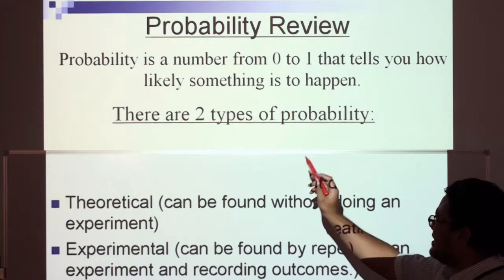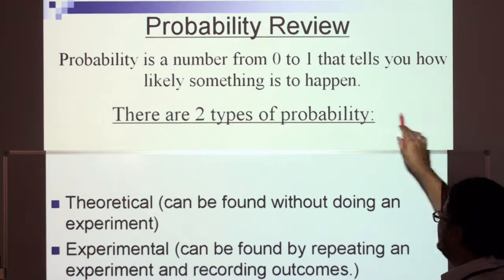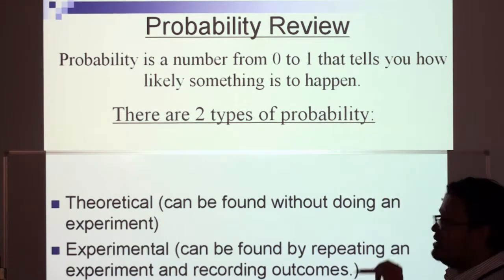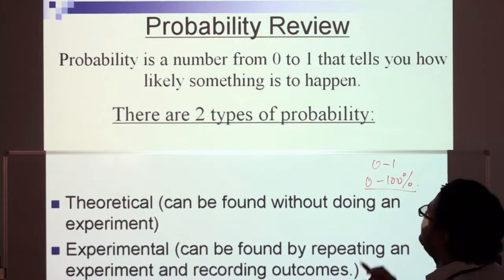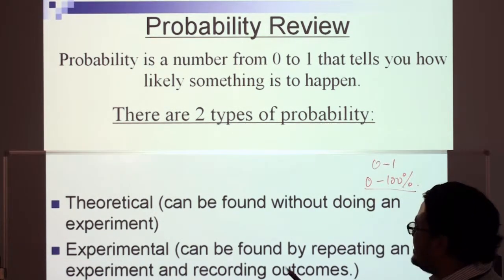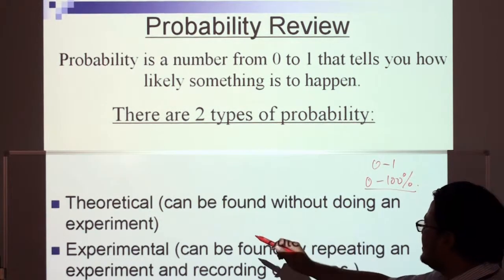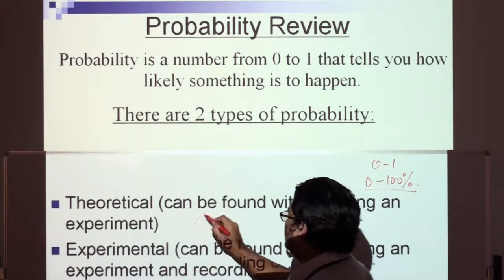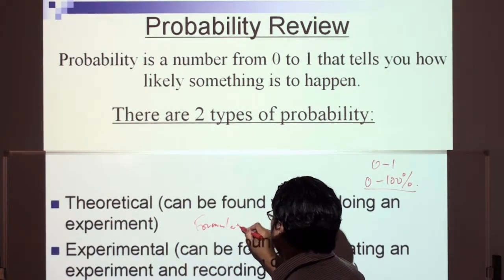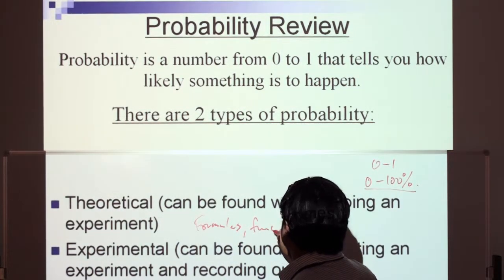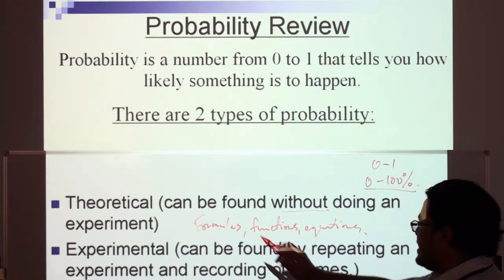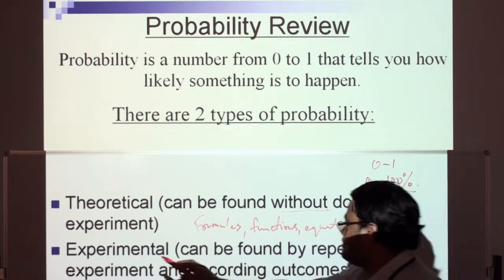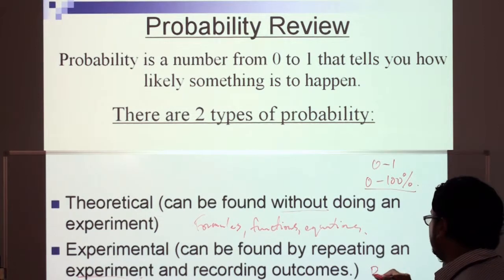Probability review: Probability is a number from zero to one — or zero to one hundred percent — that tells you how likely something is to happen. There are two types. Theoretical can be found without doing an experiment, using formulas, functions, and equations. Experimental is found by repeating an experiment and recording outcomes — that's the practical part.